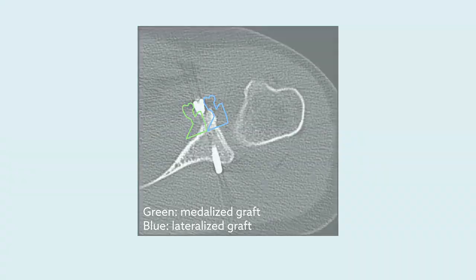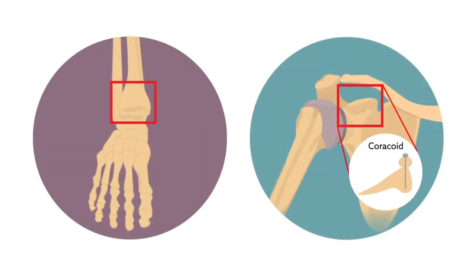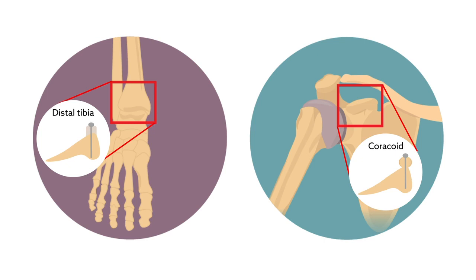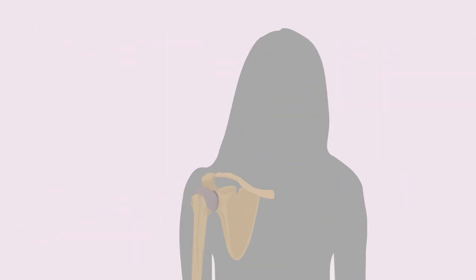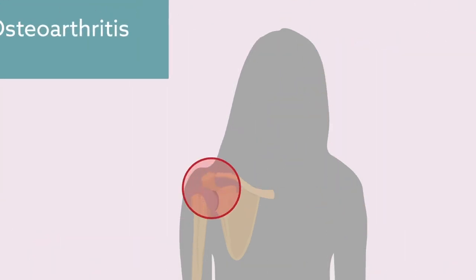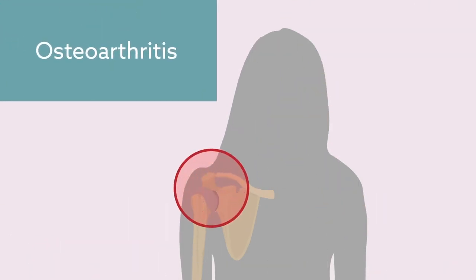This could be because the coracoid is round and completely composed of bone, whereas the distal tibia is flat and has a cartilage surface, potentially leading to better positioning. Step formation has been tied to the occurrence of osteoarthritis, so avoiding this may help prevent this outcome.